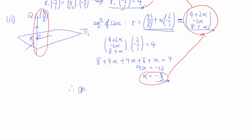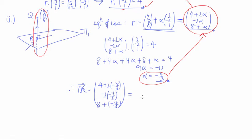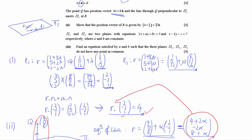Substituting α = −4/3 into the line equation: the point of intersection R = (4 + 2(−4/3), 0 − 2(−4/3), 8 + (−4/3)), which works out to (4/3, 8/3, 20/3). Since this is a show question, we can double-check our answer — and there it is, confirmed.